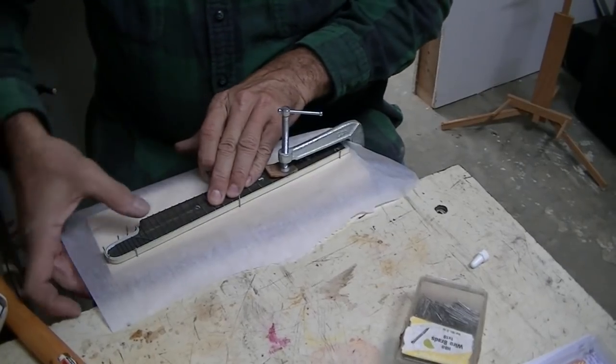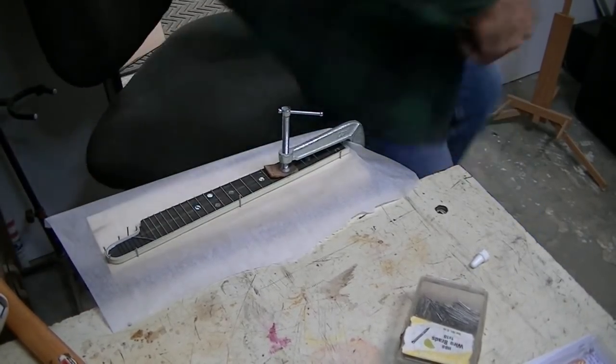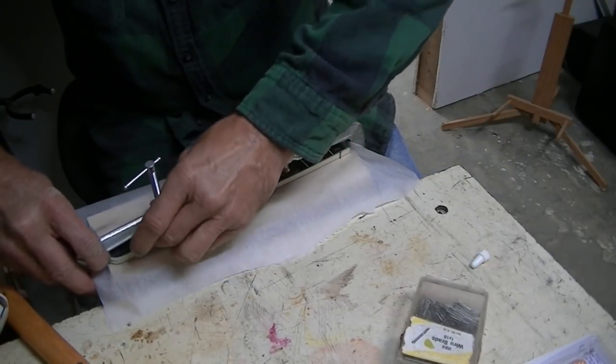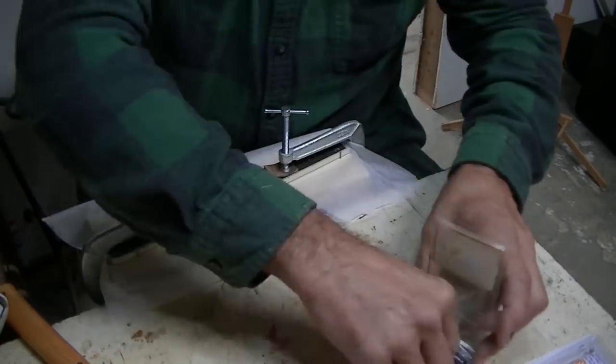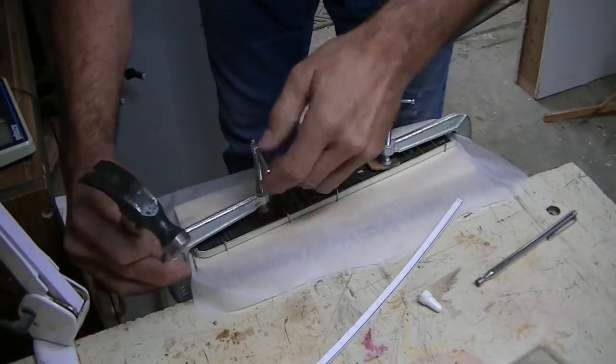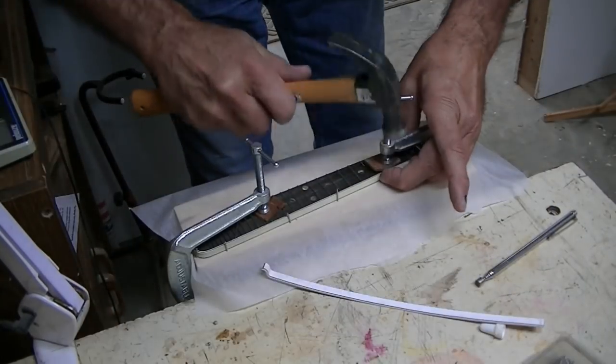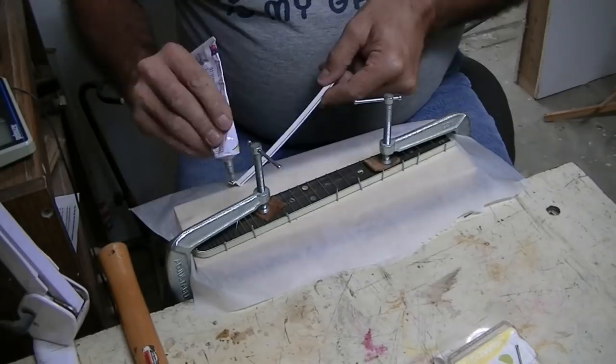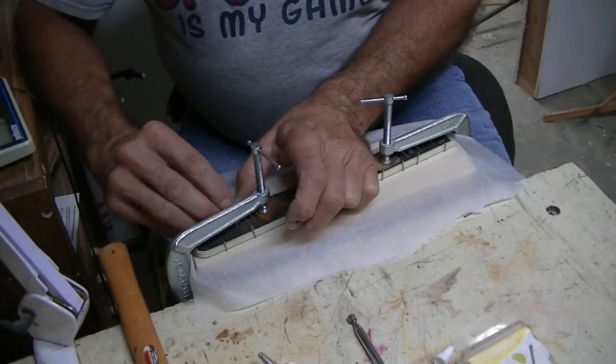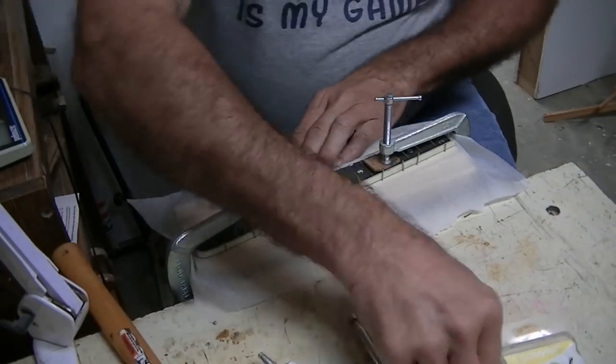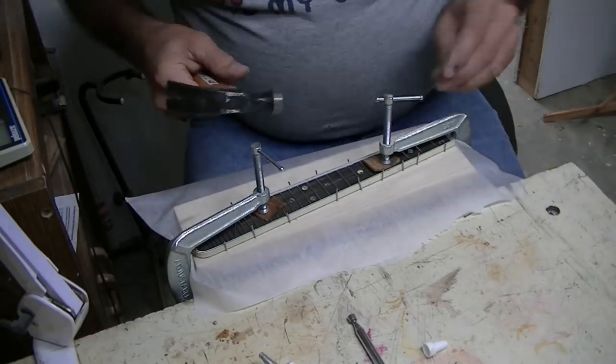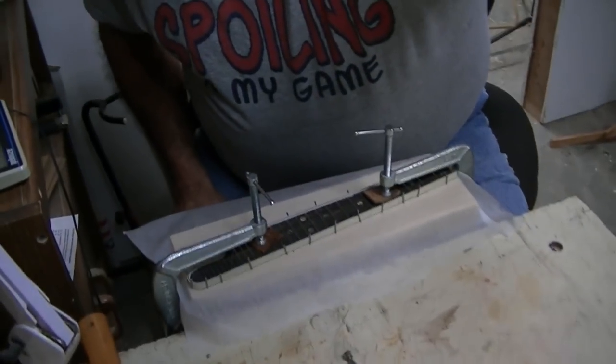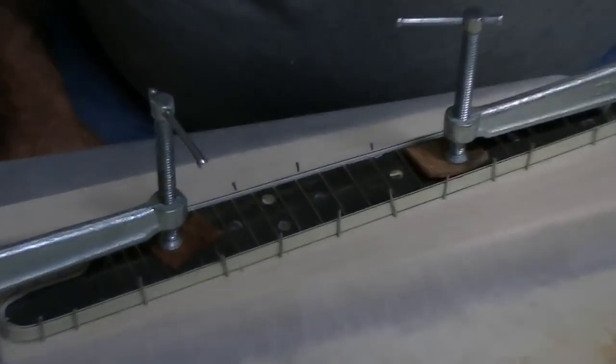All right, so what I'm going to do first is just get glue on this and get this binding in place and just sitting there. All right, that clamp helps hold it flat. Matter of fact, I'll probably just put another one there too. Okay, we're going to let that set up. Give you a little zoom in there so you can see maybe a little closer what I've actually done there.